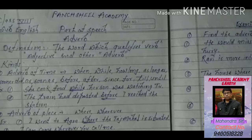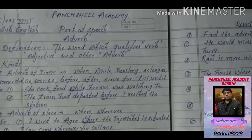Adverb of time. The word which indicates time — like when, while, how long, as long as, no sooner did, as soon as, before, after, since, for, till, until — these words denote time in a sentence. That is why they are known as adverb of time.